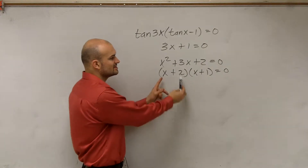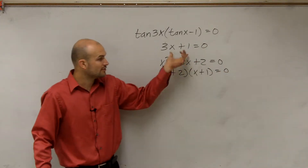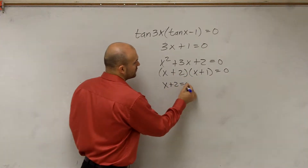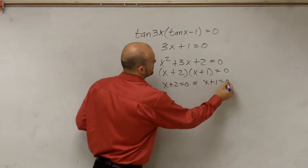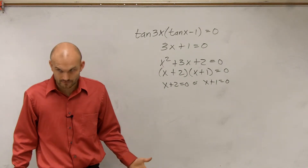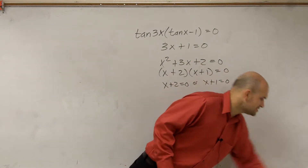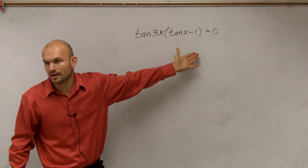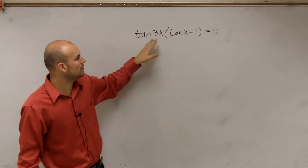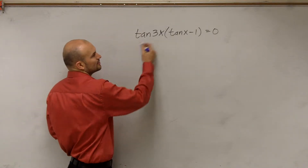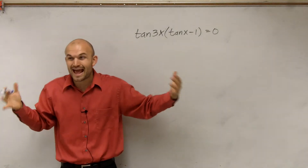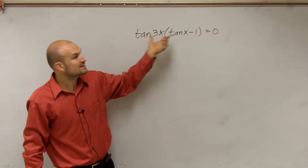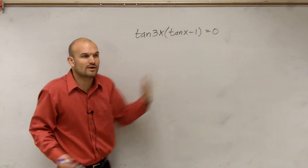The zero product property tells us that when you have two terms multiplied that give you zero, that's why we factor it. Once we have it factored, we can set each factor equal to zero and solve. Now, when students first look at this problem, the most common question is: do we multiply? Well, if you multiply, you're just expanding it — you're just going backwards. We already have it exactly where we want it — as a zero product: tangent of 3x times the quantity tangent of x minus 1 equals 0.